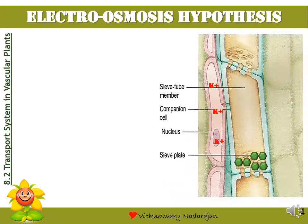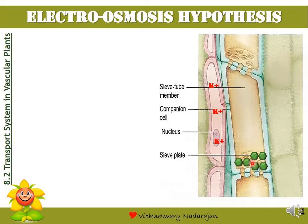Let's learn about the first hypothesis, that is the electroosmosis hypothesis. This diagram shows us the sieve tube, and the pink colour here is the companion cell. Since the companion cell is an active living cell, its cytoplasm has high amounts of potassium ions. In the sieve tube, there are sucrose molecules that need to be translocated. Let's see how the electroosmosis hypothesis explains the translocation of sucrose.